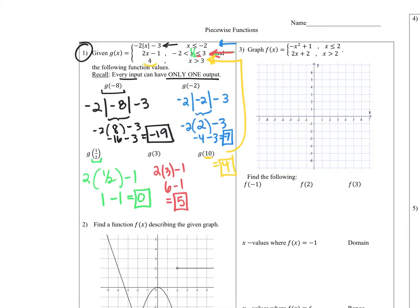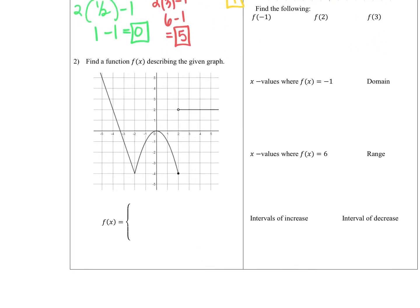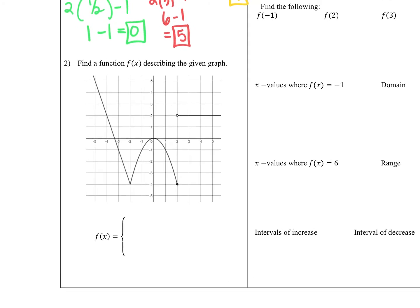For number two, it wants us to go the reverse way and come up with some functions from a graph. I notice my cutoffs are at negative two and at positive two, giving me an idea about domain restrictions. I see three parts, so the first part I see is a line.